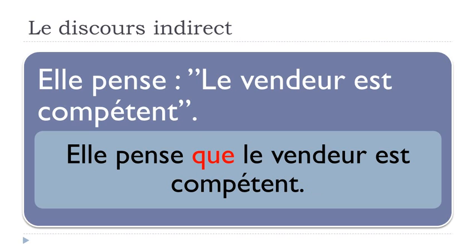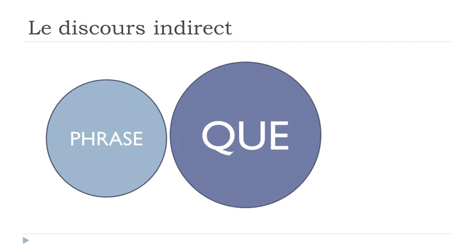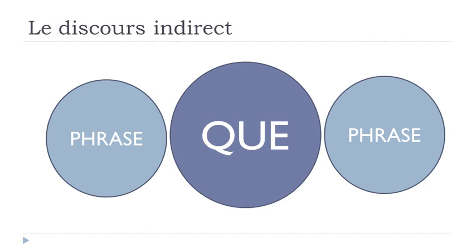In that sentence it's simple because the second part doesn't change much — you only add que and remove a few things. But in this video we'll see that in some cases there are quite important modifications. The rule: first part of the sentence, then que, then the sentence continues. Remember que before a vowel loses its 'e'. Let's look at a first example: il dit je pense que le film est bon — he says I think the film is good.